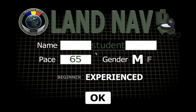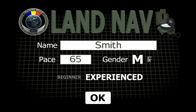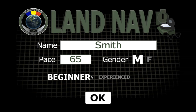On the Land Nav Introduction screen, enter your name. Enter your 100 meter walking pace count if you know it. If you don't know it, leave it as the default 65, which is the average pace count for a 6 foot tall male. Select your gender. Select your difficulty level, either beginner or experienced.